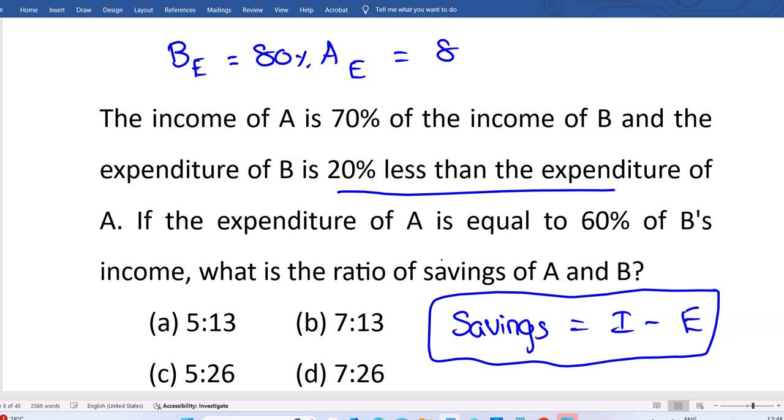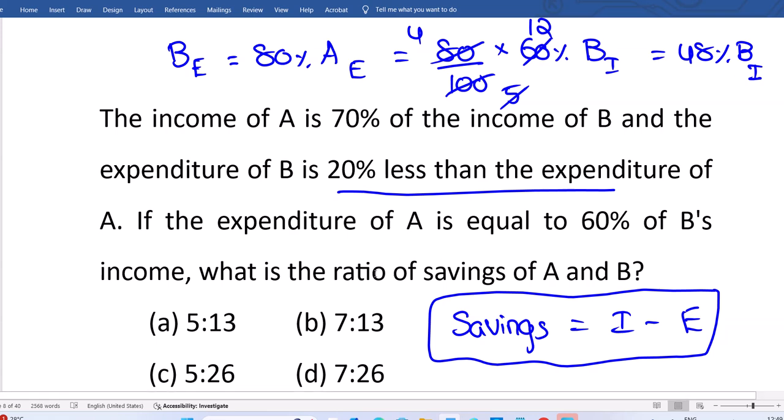So write 80%. 80% means 80 divided by 100, 4 by 5. And A expenses is 60% of that, so you can go for 60%. Let it be in percentage or you can convert that also in fraction. This is 4 by 5, this is 12 by 20. We got 48% B income, so B expenses is 48% of B income. I converted everything in terms of B income.